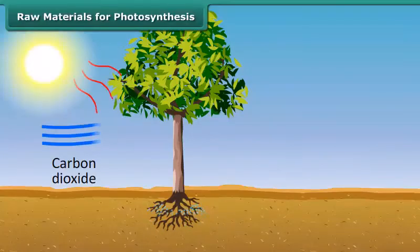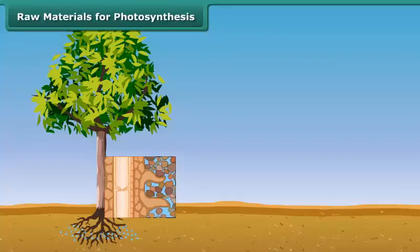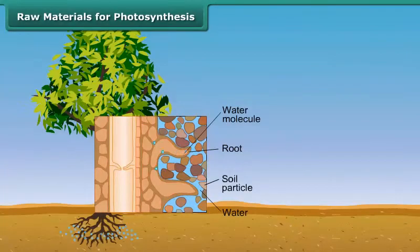And how do they transport them to the food factories of the plant? Water and dissolved minerals are absorbed directly from the soil through roots and sent to the leaves by means of many small vessels present in the stem.